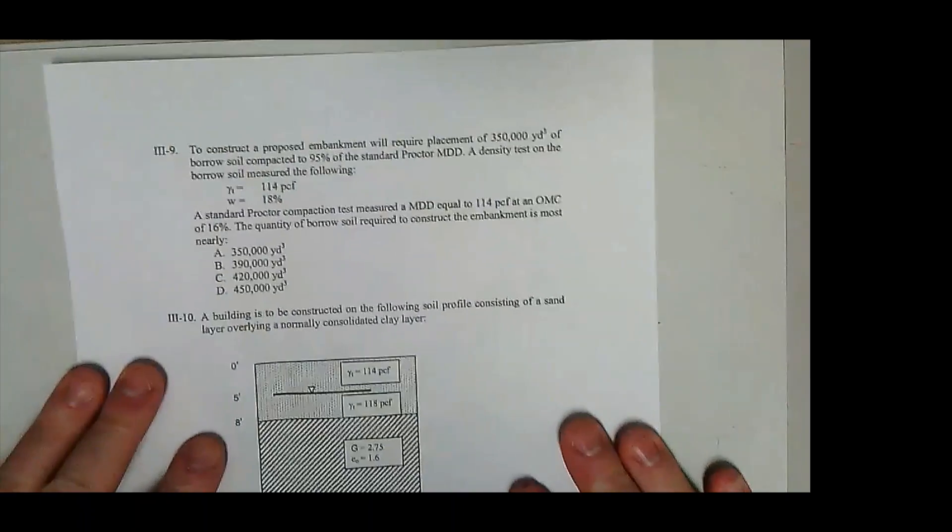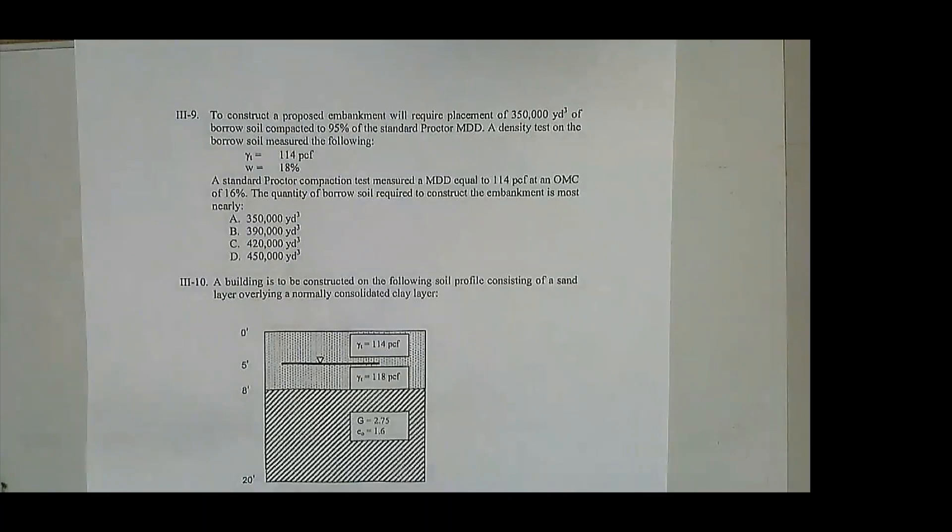Alright, to construct an embankment, which is just a big old mound of soil - think roadway embankment where you're going to build a highway on top of it, for example - require 350,000 cubic yards of borrow soil. Borrow soil is just soil that comes from another place, right? You're going to dig it up, put it in a truck, dump it somewhere, and then compact it.